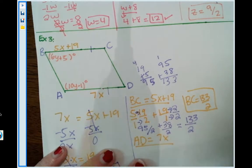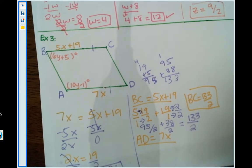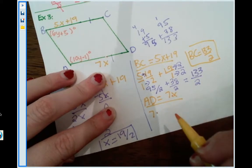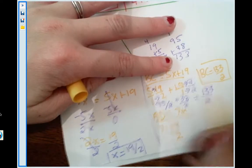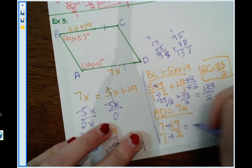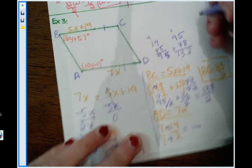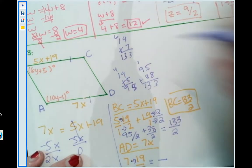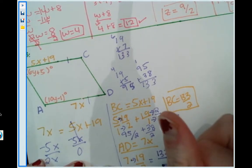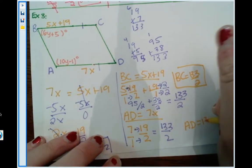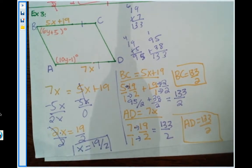And remember, since these are supposed to be congruent, I better get the same thing for this. So let's see what happens. So everywhere I spot an x, I'm going to substitute in 19 halves. So we have 7 times the x, which is 19 halves. So I'm going to write it as 19 over 2. And since we're multiplying fractions, I'm going to put this over 1. And we're going to go straight on across. So 19 times 7 is 133. And 1 times 2 is 2. We got the same thing. So AD equals 133 over 2.